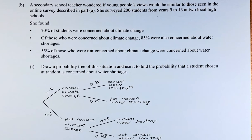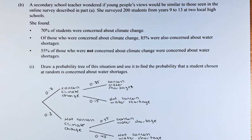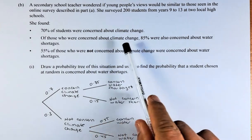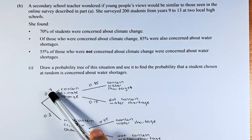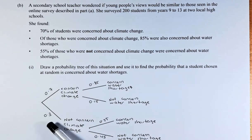If you remember, Part A is about the survey done on the whole of New Zealand. Part B is more on a particular school. She surveyed 2,000 students from Year 9 to Year 13 at 2 high schools. She found the following: 70% were concerned about climate change, so concern is 70% or 0.7, and not concerned is 30% or 0.3.